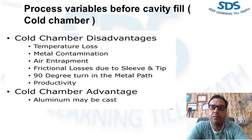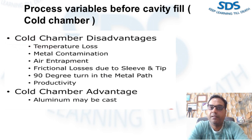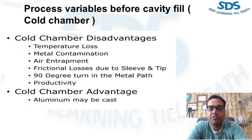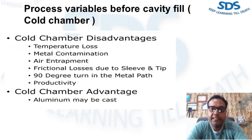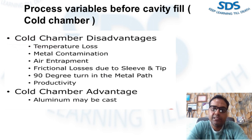We will talk about the process variables before cavity fill, and this is only for cold chamber machines. The cold chamber machine with a horizontal shot end has a significant disadvantage over other die casting processes. The metal is introduced using a horizontal sleeve, which creates opportunity for temperature loss, metal contamination, air entrainment, frictional loss due to the sleeve and plunger tip, and a 90-degree turn in the metal path. The shot end process can help minimize temperature loss and air entrainment through control of several process parameters before the metal reaches the cavity.